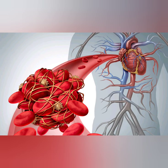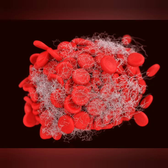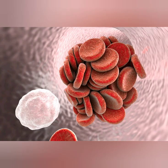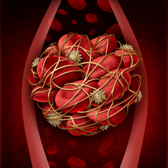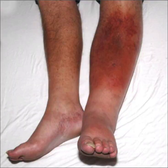Different tests are used to find clots in the body. An ultrasound uses sound waves to form a picture of the clots inside the veins. A blood test for D-dimer indicates if your blood contains a chemical substance called D-dimer, which is a product of the breakdown of a blood clot. You might also need other tests such as a CT scan of the lungs with IV contrast, or a ventilation-perfusion (V/Q) lung scan, which can show where the clots are in the lungs.